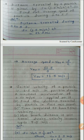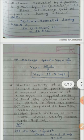At t = 5 seconds, s = 2.5 into 5 square = 2.5 into 25 = 62.5 meters. Therefore average speed = total distance divided by total time = 62.5 divided by 5 = 12.5 meter per second.